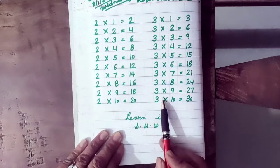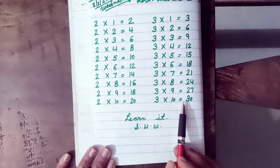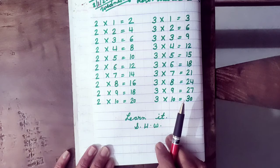3 eights are 24, 3 nines are 27, 3 tens are 30. You have to revise the table very well.